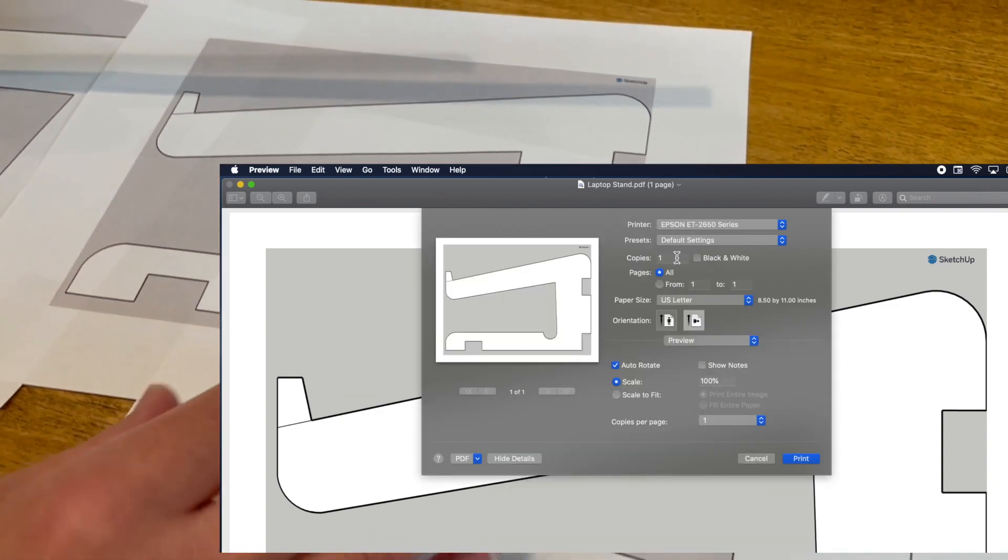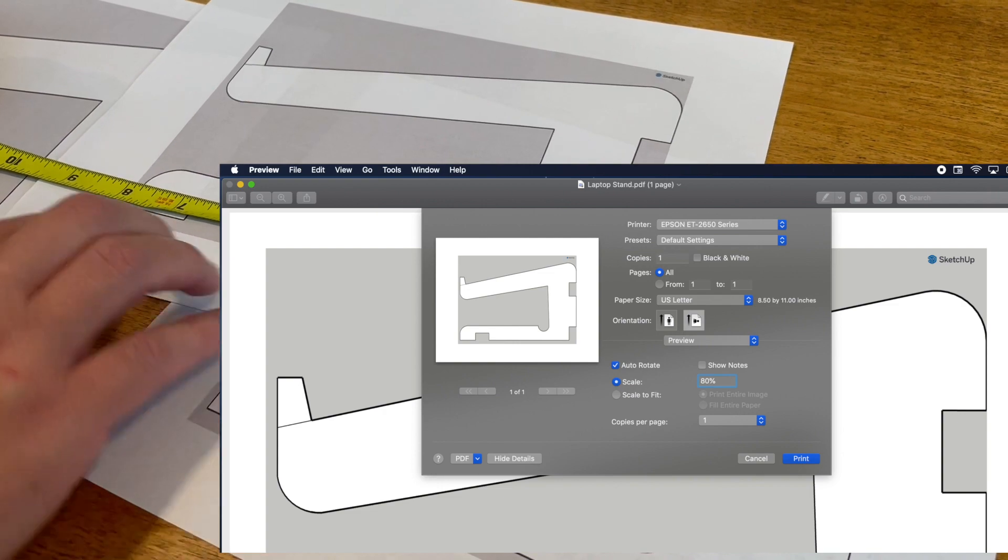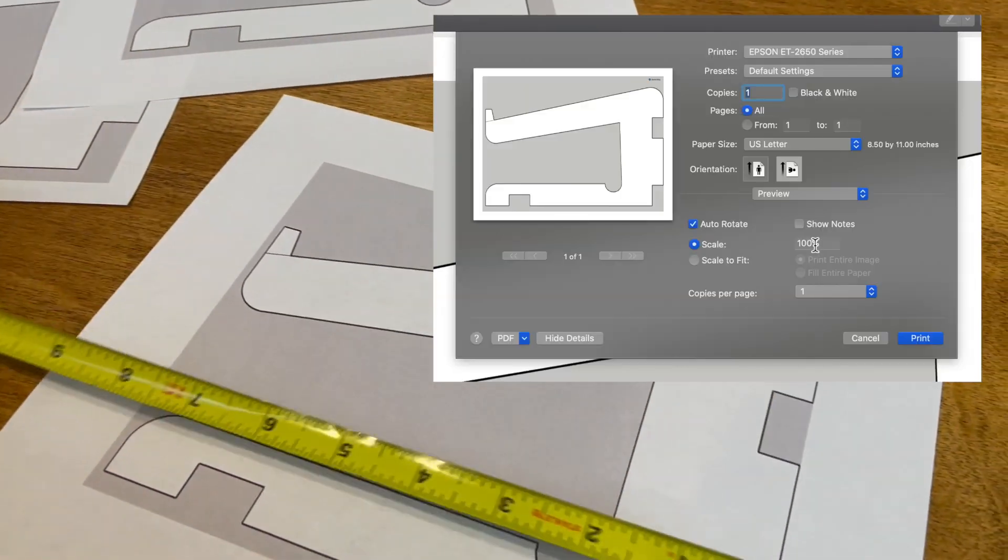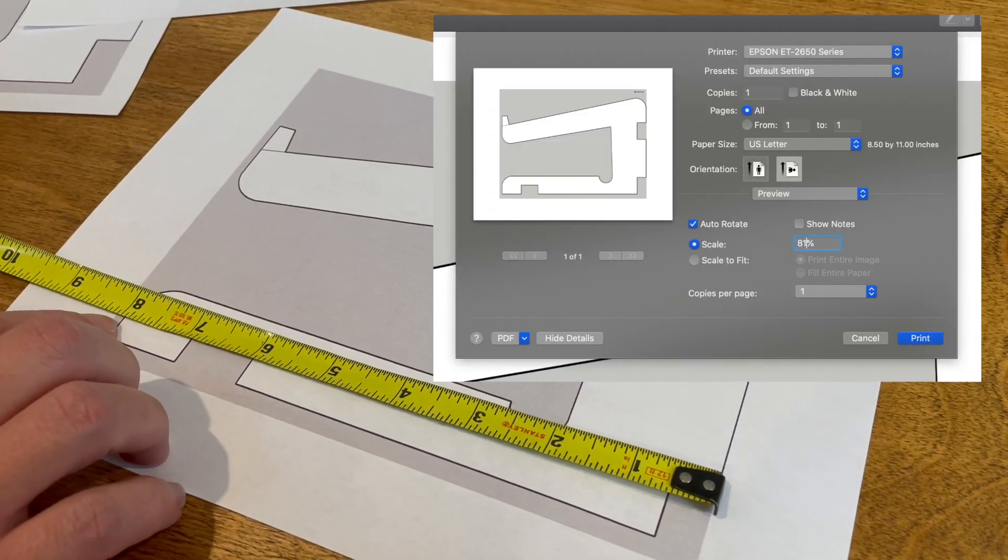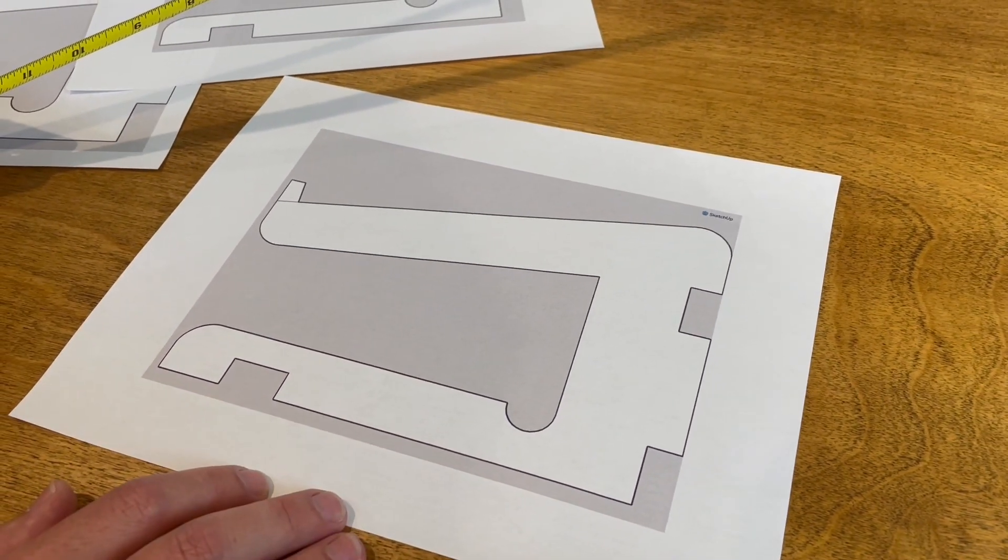I zoomed it out so that it was like an 80% zoom, and it was just shy too short. So, I did it again at 81%, and we got a perfect one-to-one scale now that we can use for our design.